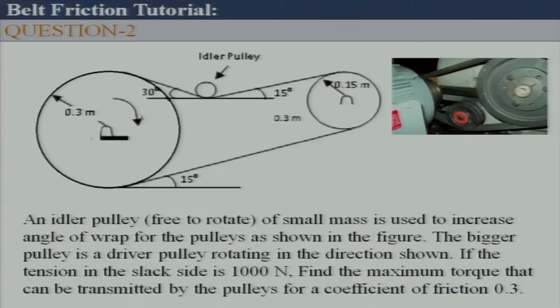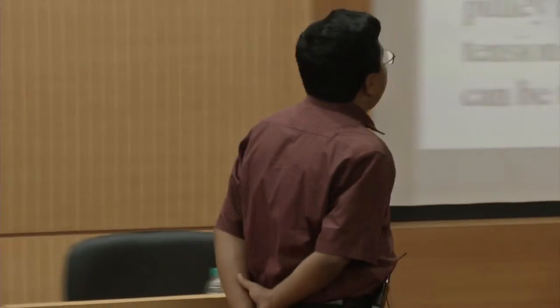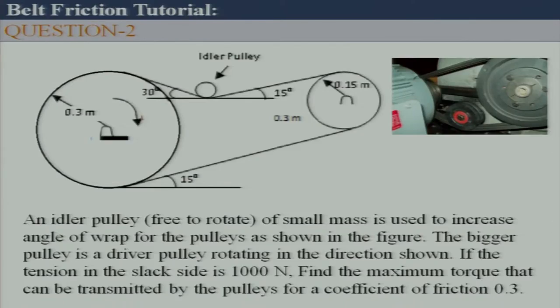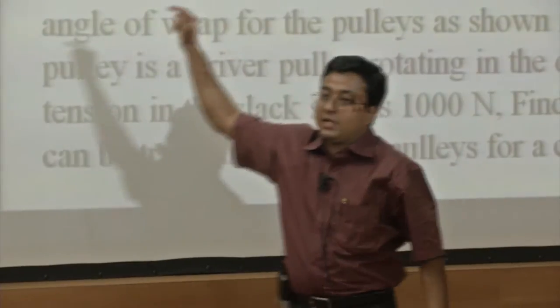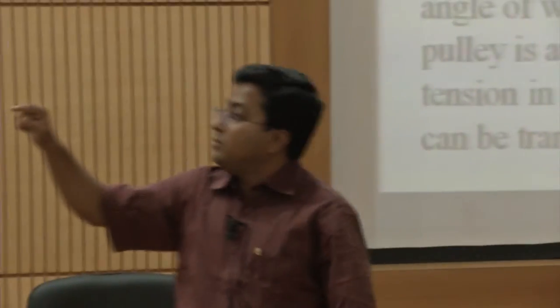The second problem is a belt drive where one side goes slack. An idler pulley is used to tighten the belt, because it increases the contact angle, which increases the torque-carrying capacity. The idler pulley has very small mass and is free to rotate, so we treat it as frictionless — meaning the tension is the same on both sides of that pulley.